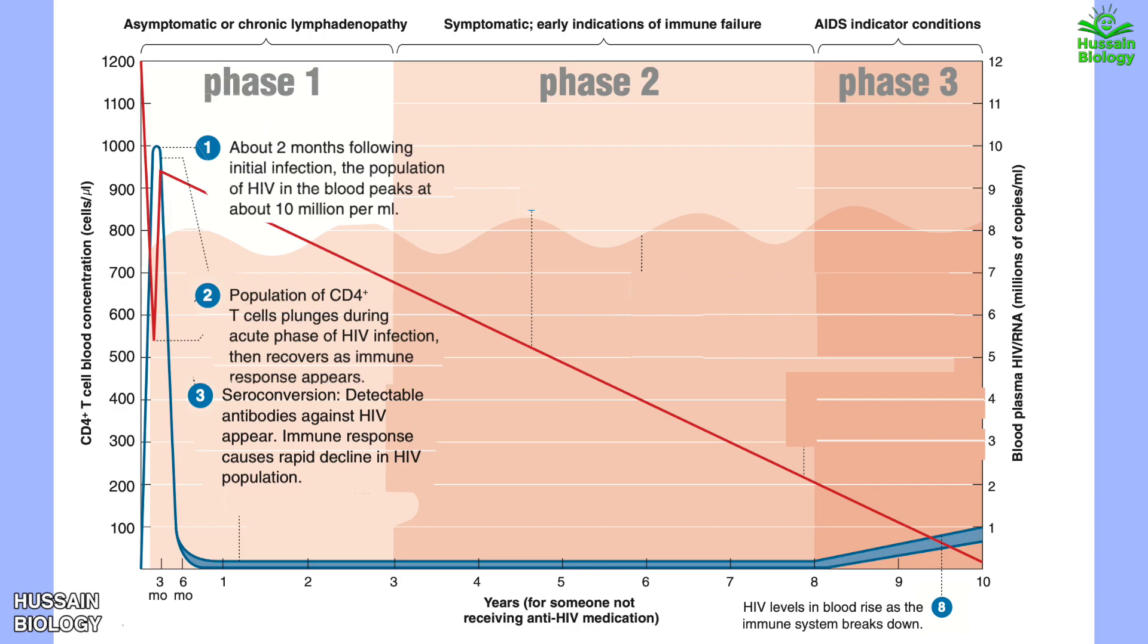Then we have the second phase. The number of CD4 T cells declines steadily, depicted by the red line here. HIV replication continues but at a relatively low level, probably controlled by CD8+ T cells, and occurs mainly in the lymphatic tissue. This phase is symptomatic with early indications of immune failure.